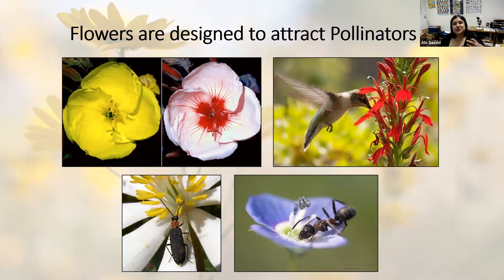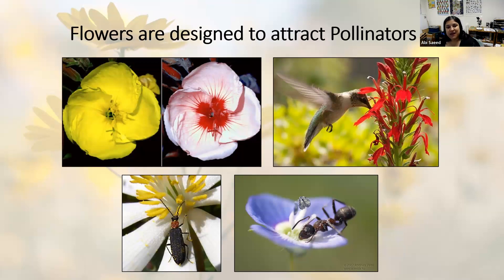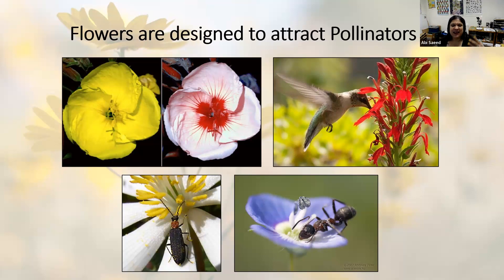Flowers are designed to attract pollinators and have various features that make them attractive and user-friendly to the types of pollinators they cater to. Looking at that flower on the top left, the yellow version is what we'd see with our eyes, but on the right we see what that flower looks like to a bee. Many flowers have UV markings called nectar guides which lead bees to the nectar source. Flowers pollinated by birds usually have deeper nectar sources, while those pollinated by insects with shorter tongues have shallower, easily accessible nectar and pollen.